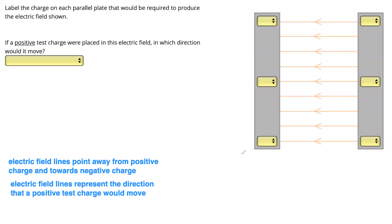This question is asking us to find the same thing — the charge, this time on some charged plates. Again, we use the rule that electric field lines point away from positive charge and towards negative charge. Since our field lines here are going to the left, they must be going towards negative charge. So this plate must be negatively charged, and away from positive charge.